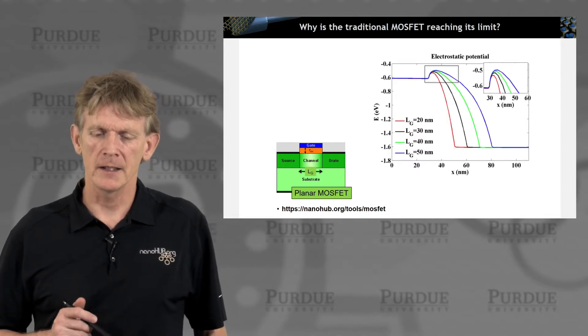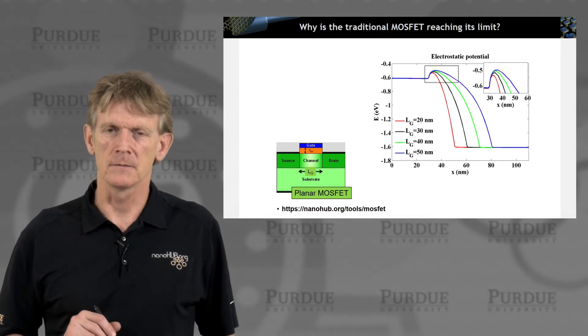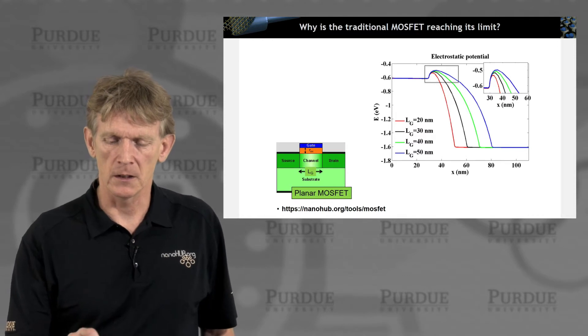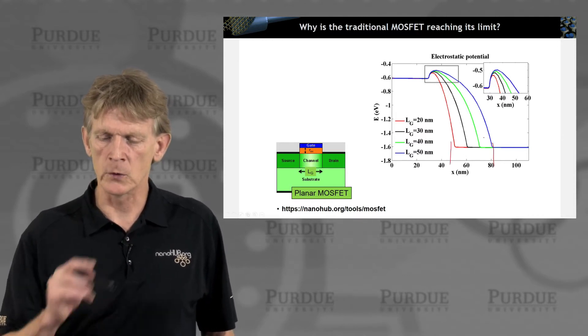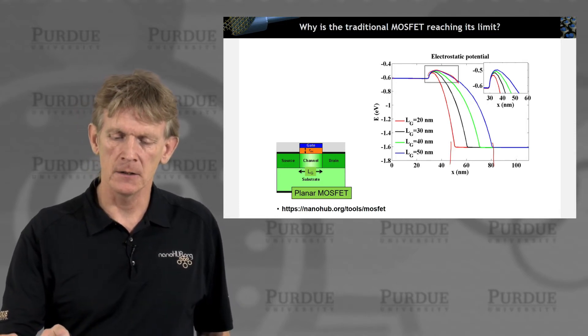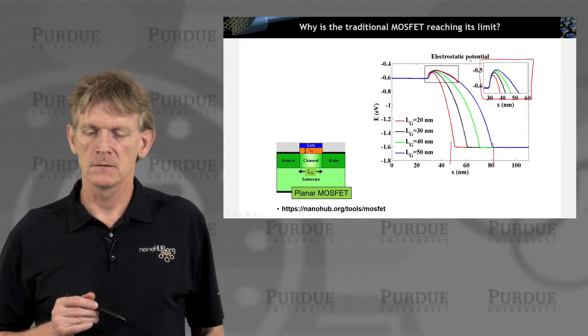When you plot the potential along the channel that looks for a large gate, one for 50-nanometer gate (that's the blue curve), you get the picture you expected, where up here you have a nice peak that's blown up in here, and life is good.